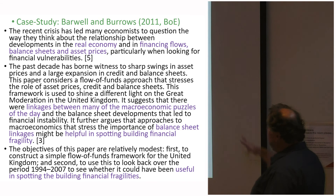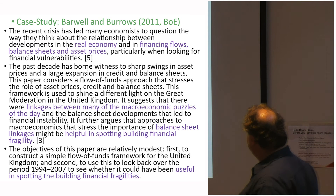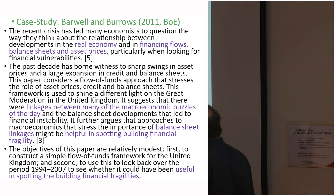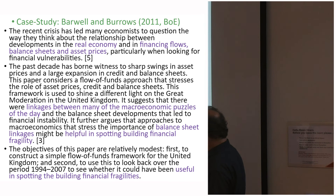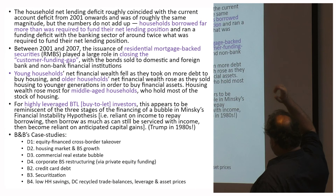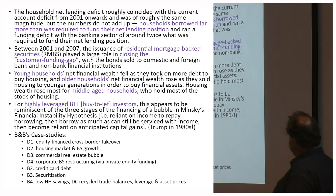US data is easy to get for GFC modelling with many existing models to build on. In the UK, Barwell and Burrows (2011) looked at macro puzzles and balance sheet linkages to spot financial fragility. Households borrowed far more than required to fund their net lending position, and residential mortgage-backed securities from 2001 to 2007 played a big role in closing what was called the customer funding gap.